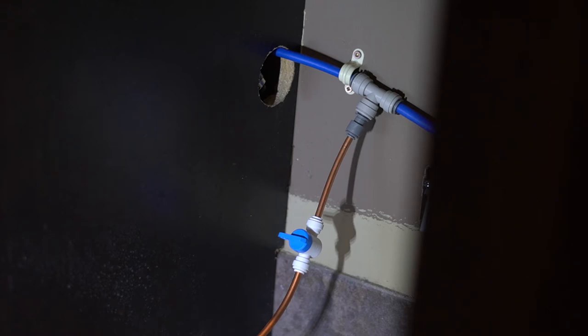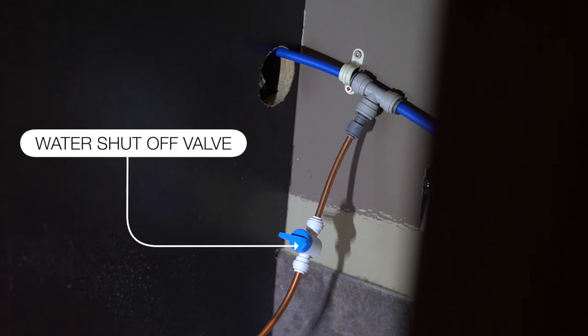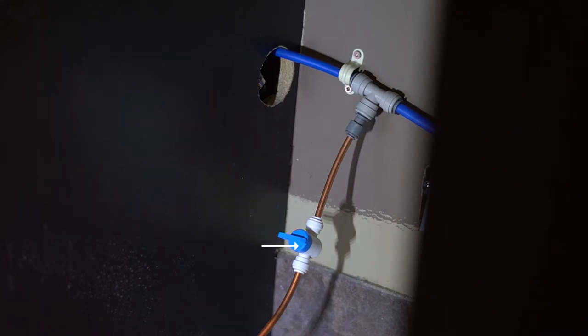As you can see here, we've connected into the pex line with the T connector and use quarter inch copper OD line to a manual shut-off, which is very important in the event that you need to turn the water off to your ice maker, and then use the quarter inch copper line that feeds water right into the ice maker.